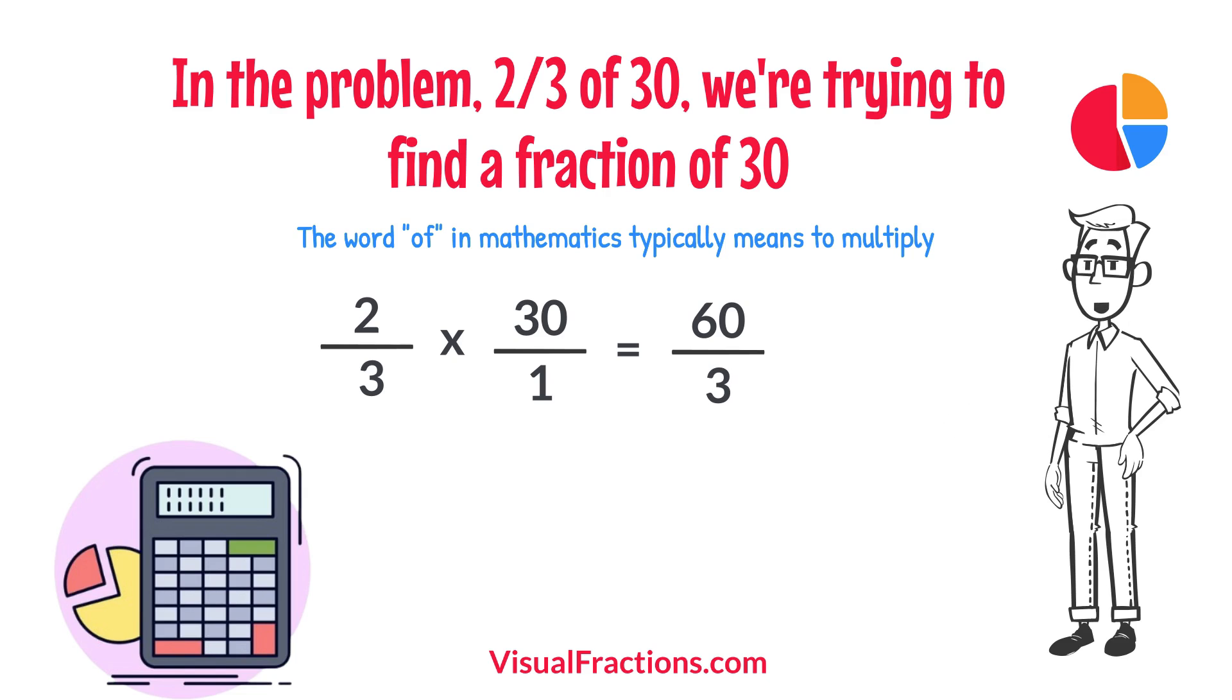We now have a new fraction, 60-thirds. To find the final answer, divide the numerator by the denominator. So, 60 divided by 3 equals 20.